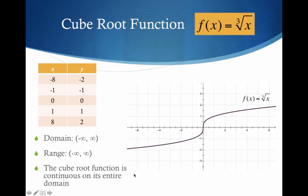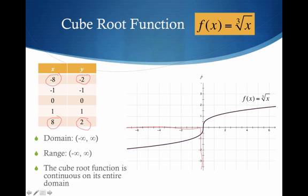The cube root function — for every x I plug in, I cube root to get my y. If x is negative 8, I cube root to get negative 2. If x is positive 8, I cube root to get positive 2. The domain and range is negative infinity to infinity, because we're in the third quadrant and the first quadrant. The cube root function is also continuous.